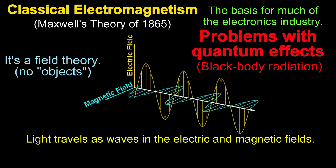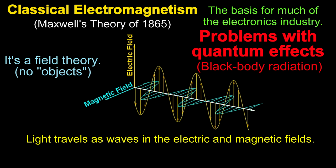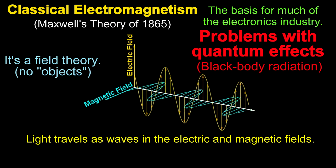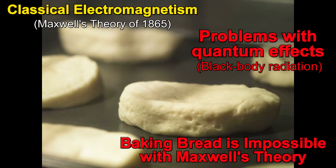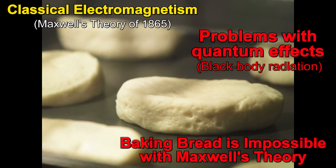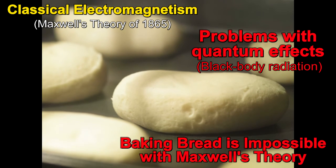This was first demonstrated with black body radiation. That's the radiation inside a container in thermal equilibrium, like an oven used for cooking. Maxwell's theory predicts that an oven will never heat up. Yes, it predicts that you can't bake bread.